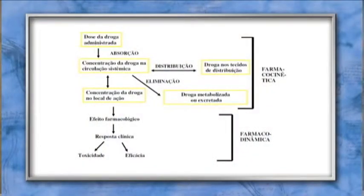Antes de estudarmos as drogas que agem sobre o sistema nervoso central, precisamos falar sobre dois aspectos da farmacologia: a farmacocinética, que estuda a evolução temporal da droga in vivo — relacionada com absorção, distribuição e eliminação — e a farmacodinâmica, que estuda o efeito farmacológico no seu local de ação, determinando resposta clínica, podendo induzir toxicidade e eficácia. Em outras palavras, a farmacocinética registra o que a droga fez ao corpo (absorção, distribuição e eliminação), e a farmacodinâmica é a ação da droga no corpo.